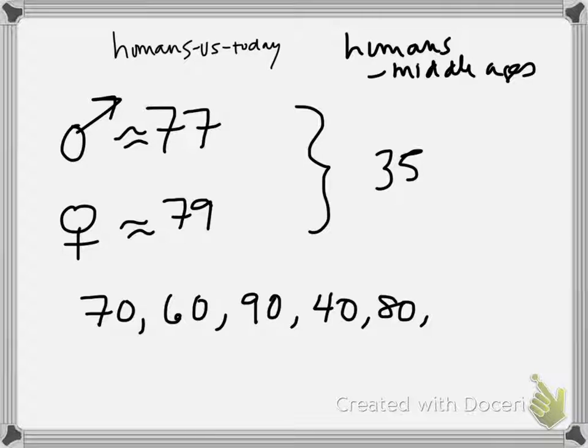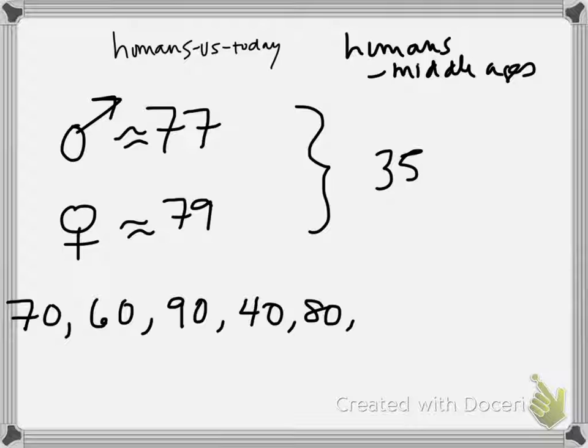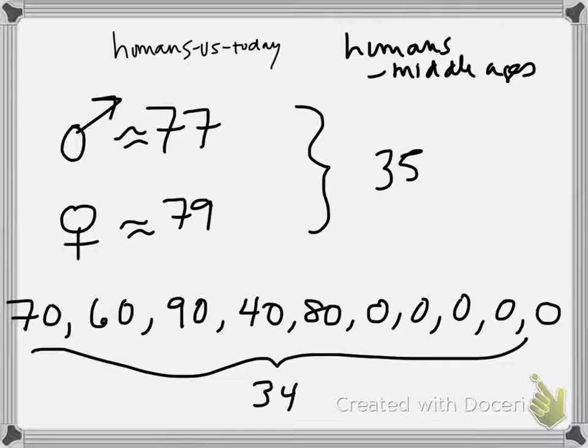Let's take that into account in our average here. What if half the people born never see their first birthday? So our average life expectancy here, I'm going to add up all these numbers: 70 plus 60, plus 90, plus 40, plus 80, plus five zeros, divide by 10. That gives us an average life expectancy of 34. Does that mean people are dying at 34? No. Plenty of them are living to ripe old ages.